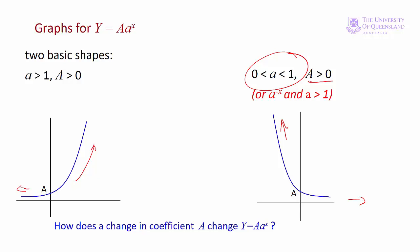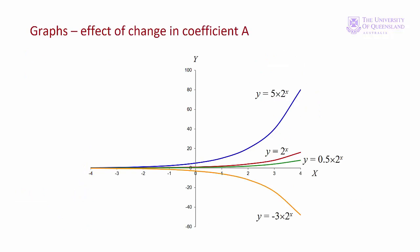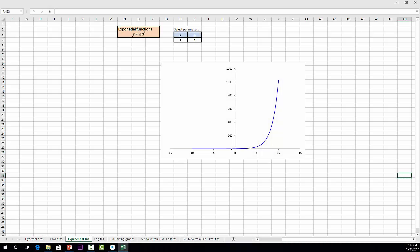Now let's see how change in the coefficient changes the graph of the exponential function. So here we have y equals a times 2 to the x. In this case a is equal to 5 and a equals 1, a equals a half and a equals minus 3. Once again you'd go to the Excel file and see how change in the coefficient and the base change the graph.